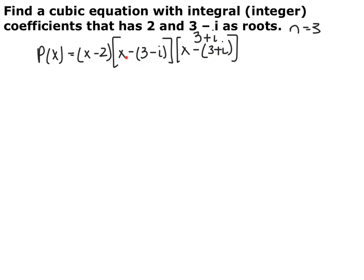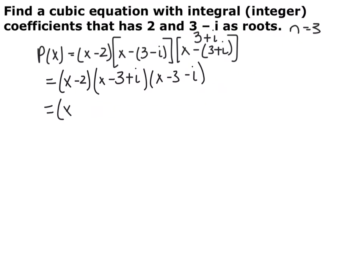I always start with the complex part because the i's will end up canceling. I distributed the negative in to get x minus 3 plus i and x minus 3 minus i, then leave the x minus 2 out in front. Foiling these next two terms — x times x is x squared, x times negative 3 is negative 3x, and x times negative i is negative ix. Go ahead and pause the video and finish foiling these out.